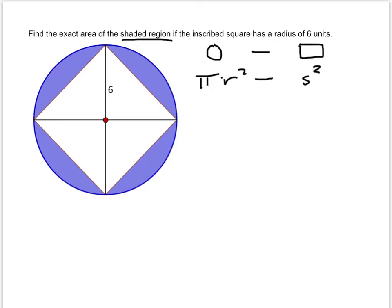So, we already know the radius of the circle, and that's 6. So that means this length is 6, and so are all of these other lengths, equal to 6.